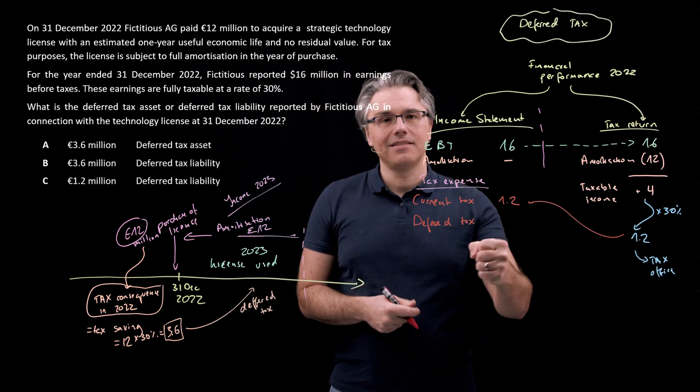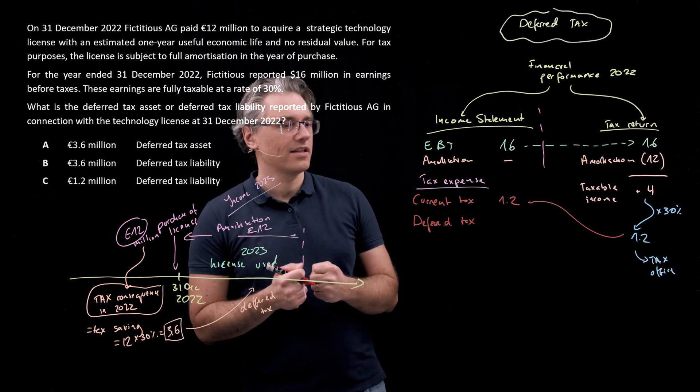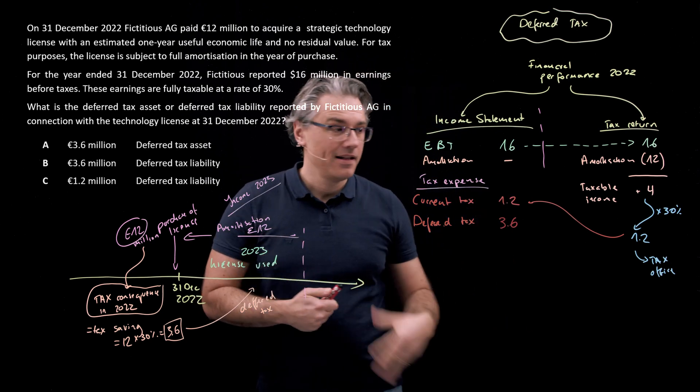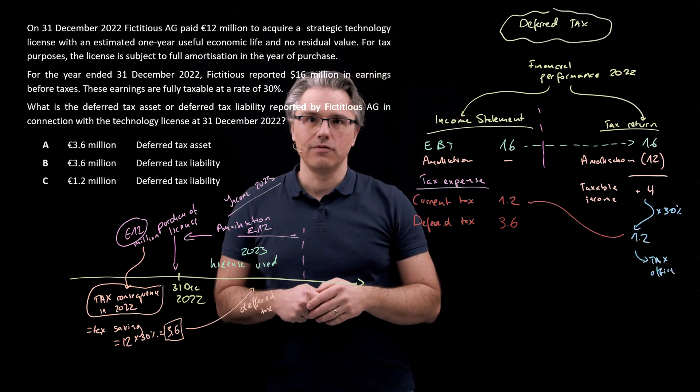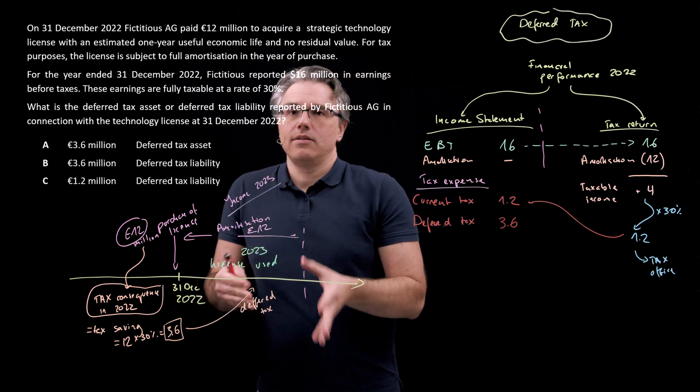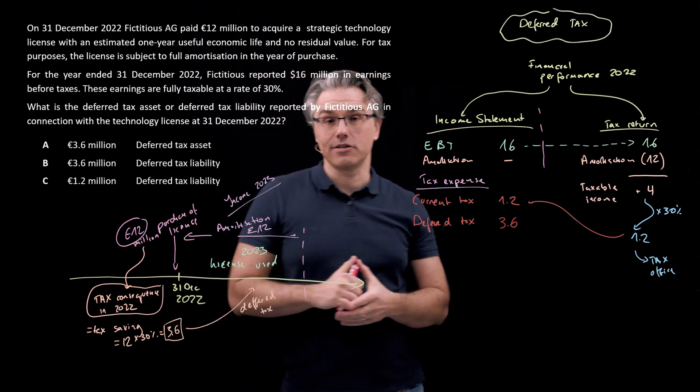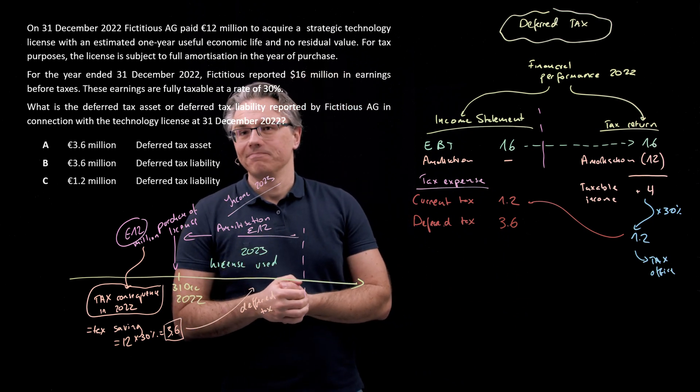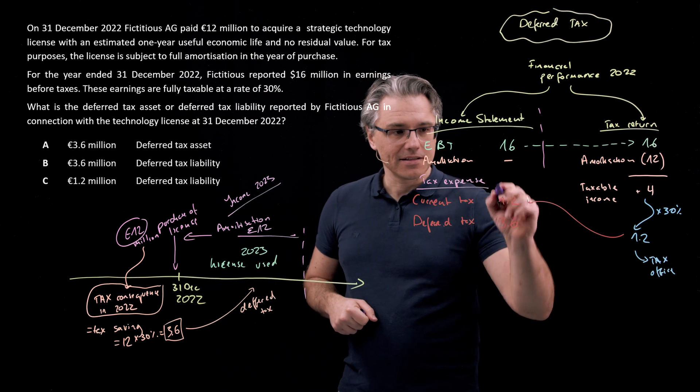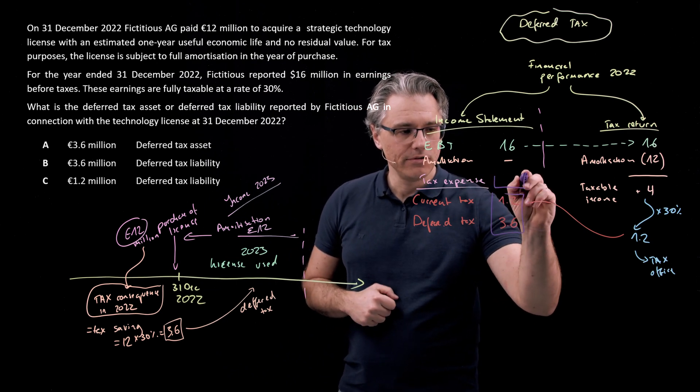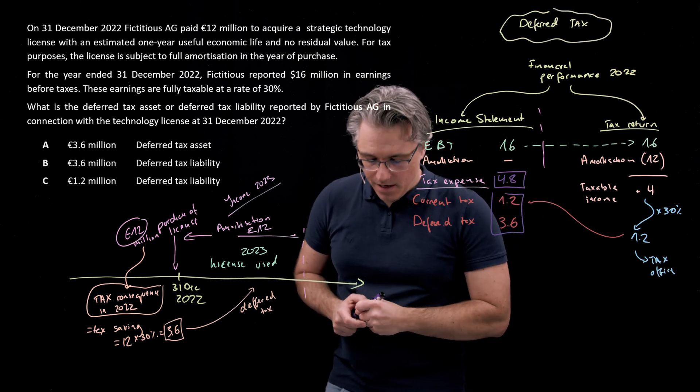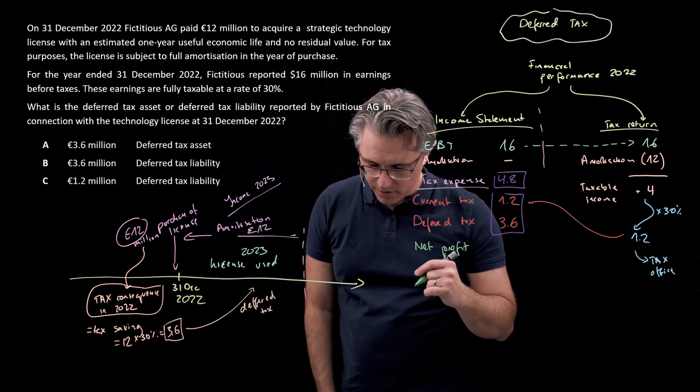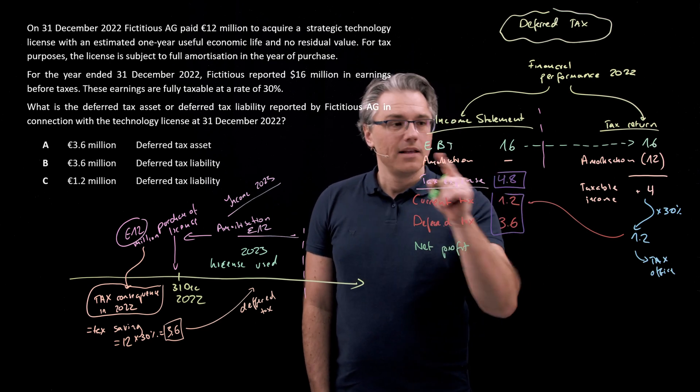The whole idea here is I know I've already received the benefit from a tax perspective of amortizing this asset fully, but I want to achieve something opposite. I want to pretend that this benefit hasn't happened so as to recognize it in the income statement later than it has actually happened. So what I need to do this time is hit my income statement with an additional expense of 3.6, so as to make the tax expense bigger than in reality the tax paid to the tax office. Because I want to recognize the benefit in the next year, not in the year when the benefit actually occurs. That's why I need to load my tax expense with an additional 3.6, making the tax expense total equal to 4.8.